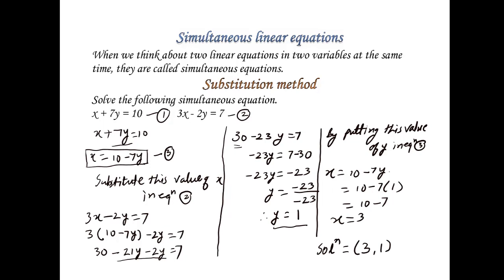We will see the other variable using the function. We will determine the equation for one variable, and then this equation will be substituted into the other condition of the equation. So you can see the two equations for the next example.